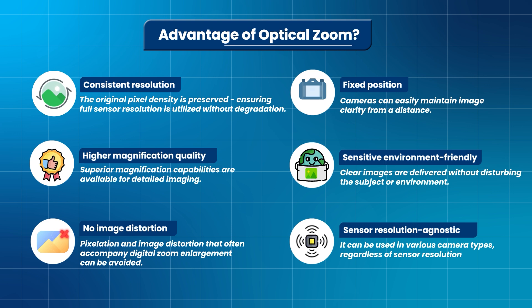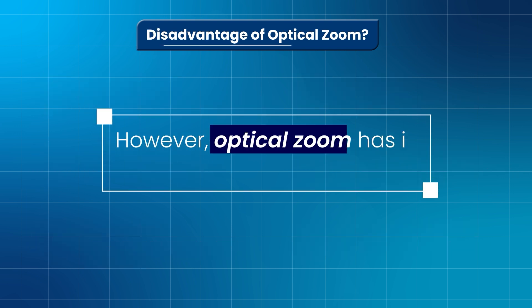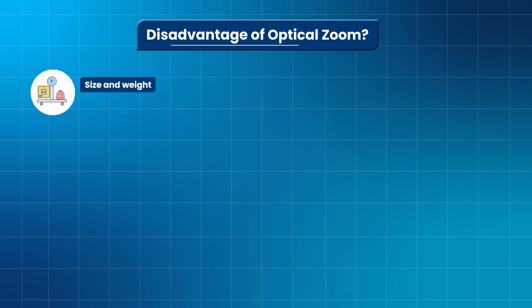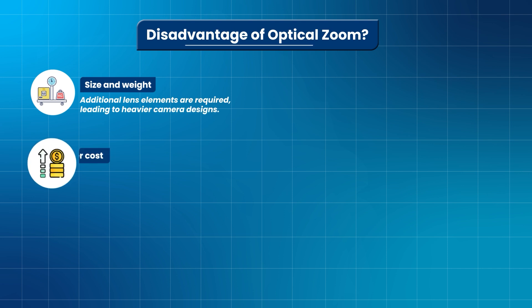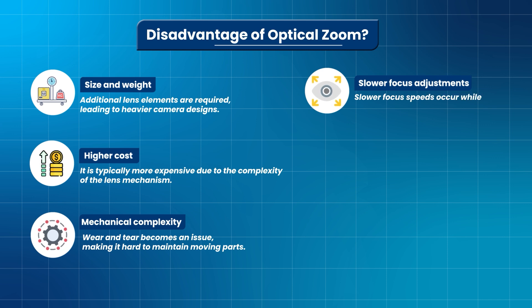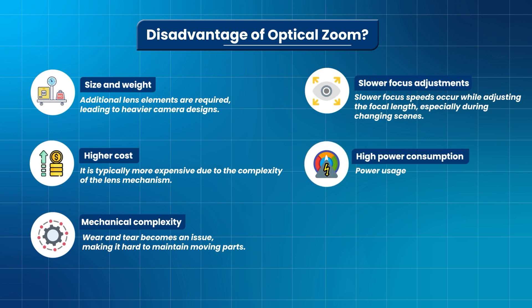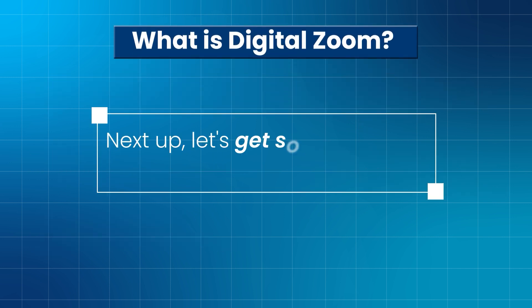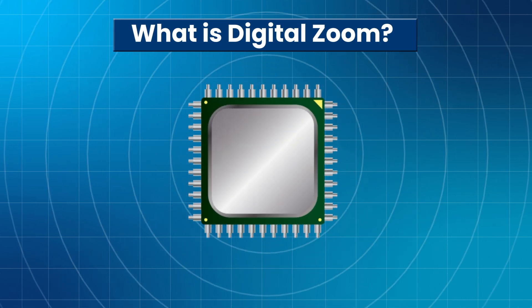However, optical zoom has its drawbacks. These include size and weight, as additional lens elements lead to heavier camera designs, and higher costs due to the complexity of the lens mechanism. Mechanical complexity means wear and tear becomes an issue, making moving parts hard to maintain. There are also slower focus adjustments during changing scenes and higher power consumption due to mechanical movement, which affects battery-powered applications.